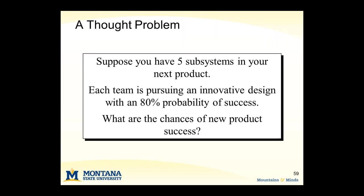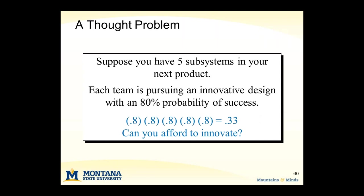Here's a quick thought problem: suppose you have five subsystems in your next product, and each subsystem team is pursuing an innovative design with an 80% probability of success. What are your chances of the whole product being a success? If you run the probabilities, it'd be 0.8 to the 5th — in other words, you've got a 33% chance of success. And that's not very good.